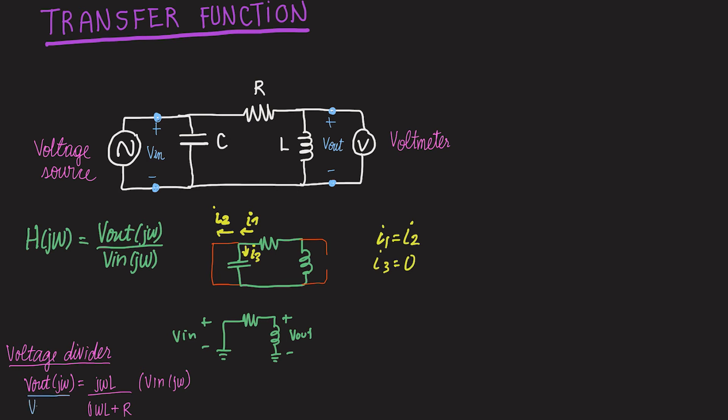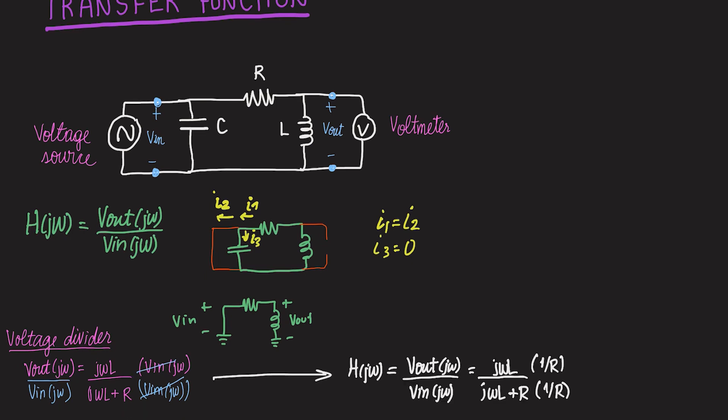Since we need the voltage ratio, we can divide across by Vin jω and get our transfer function. To get it into a nice format, let's divide everything by R. Okay, great. Now we have here, boxed in red, your circuit transfer function.